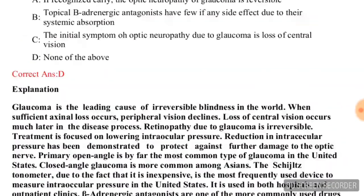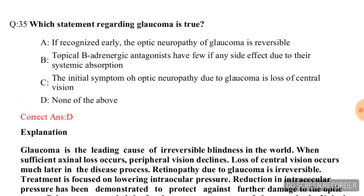Question number thirty-one: Which statement regarding glaucoma is true? Options are: the optic neuropathy of glaucoma is reversible if recognized early; topical beta-adrenergic antagonists have few if any side effects due to systemic absorption; the initial sign of optic neuropathy due to glaucoma is loss of central vision; none of the above. The correct answer is option D, none of the above.